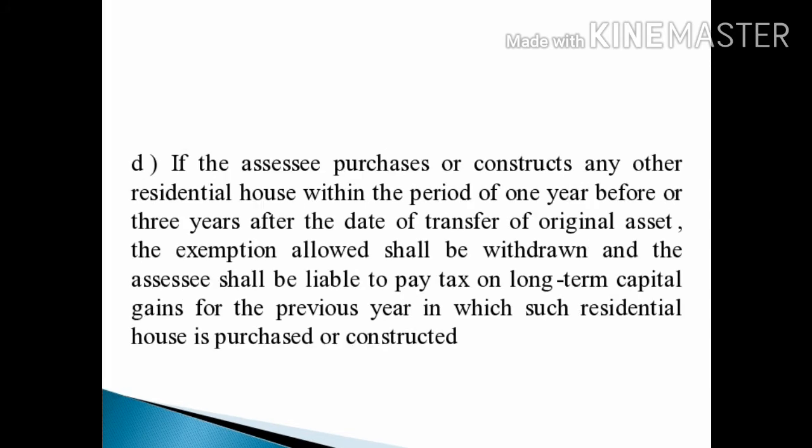The fourth case: if the assessee purchases or constructs any other residential house within the period of one year before or three years after the date of transfer of the original asset, the exemption allowed shall be withdrawn and the assessee shall be liable to pay tax on long-term capital gains for the previous year in which such residential house is purchased or constructed.